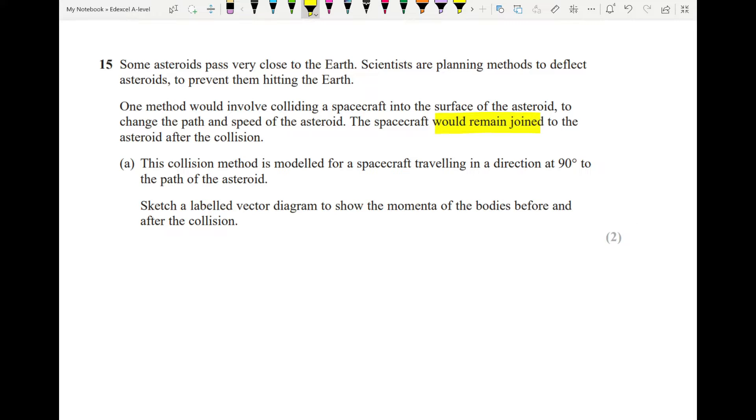This collision method is modeled for a spacecraft traveling in a direction 90 degrees to the path of the asteroid. Sketch a labeled vector diagram to show the momentum of the bodies before and after the collision. We don't have any information as of yet of how much that is, so it's not a scale diagram. But we can draw, there's the asteroid, and that's its momentum going across there. We know that the spacecraft is going to come in at 90 degrees here. And when it does that, we know it's going to deflect the path of the asteroid to some point upwards. So we know that our resultant is going to be somewhere like this. With a vector diagram, we should always be drawing them tip to tail. So we draw our vector from the tail of the vector there and it comes up like that. This is our spacecraft. And then this is our combined asteroid and spacecraft afterwards.